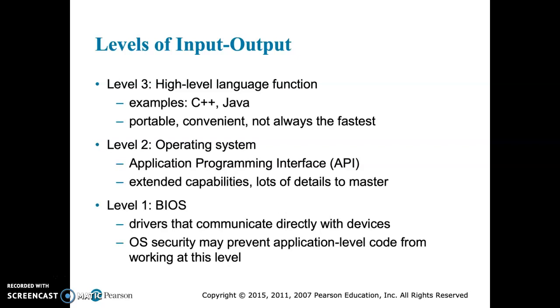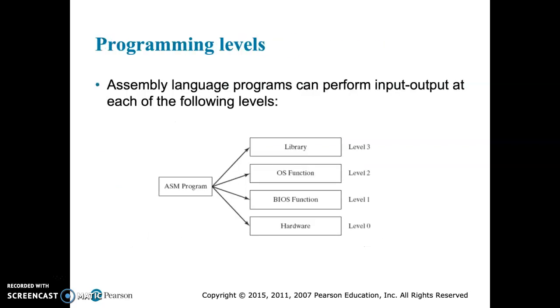And the last thing I want to cover here is the levels of input and output. We have level three, two, one, and actually level zero we'd call the hardware. Level three is our high level language, and that is something that's, if it's written in a high level language, is portable across machines. Levels two and one are going to be operating system specific and are not portable. So our ASM or our assembly language has the ability to write at any of the levels, but it's going to provide most value at level two and below where specific information to the machine is needed.